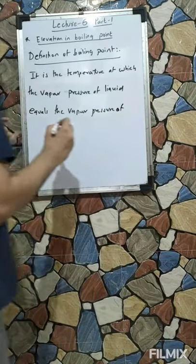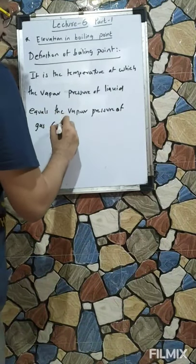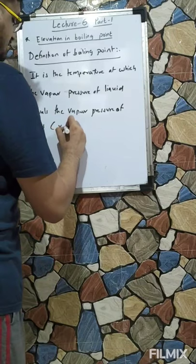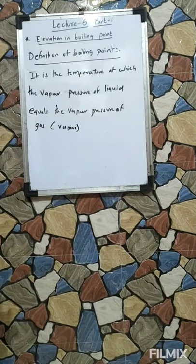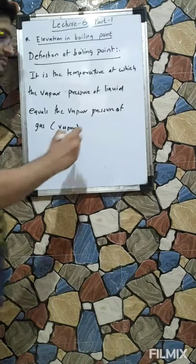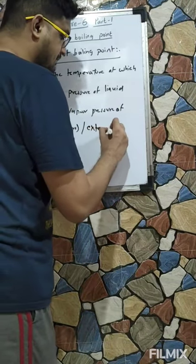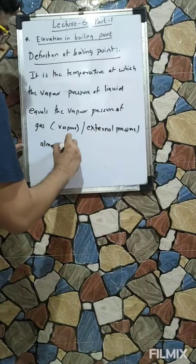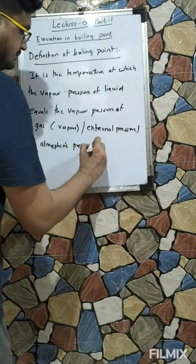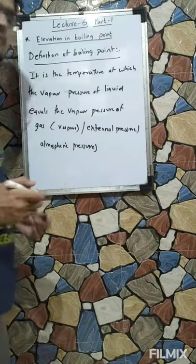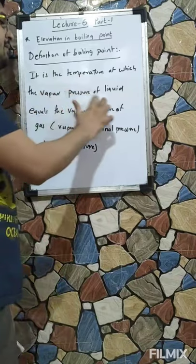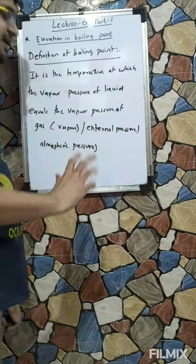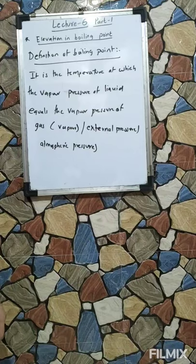The technical definition of boiling point: it is the temperature at which the vapour pressure of the liquid equals the vapour pressure of the gas, or equals the external pressure — the atmospheric pressure. This is the technical definition.